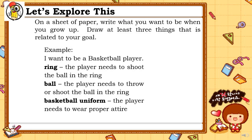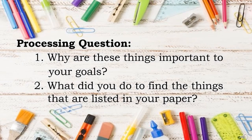For your Let's Explore This activity, on a sheet of paper, you are going to write what you want to be when you grow up. Draw at least 3 things that are related to your goal. Example: I want to be a basketball player — Ring: the player needs to shoot the ball in the ring; Ball: the player needs to throw or shoot the ball; Basketball uniform: the player needs to wear proper attire. After doing the activity, answer the two processing questions: 1. Why are these things important to your goals? 2. What did you do to find the things listed on your paper?